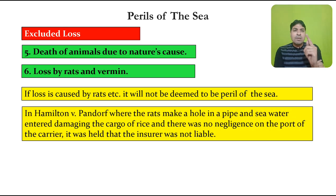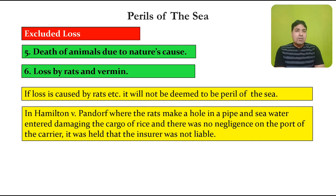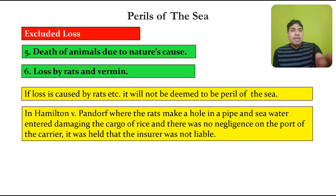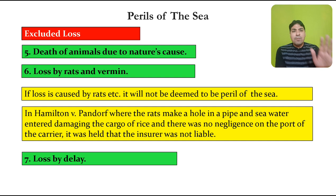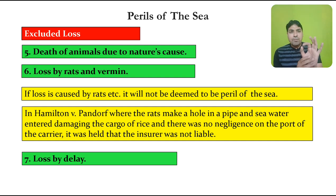In the case of Hamilton v. Pandorf, where rats made a hole in a pipe and sea water entered damaging the cargo of rice, and there was no negligence on the part of the carrier, it was held that the insurer was not liable, as the loss was caused by rats making the hole — the case was decided in favor of the insurance company.